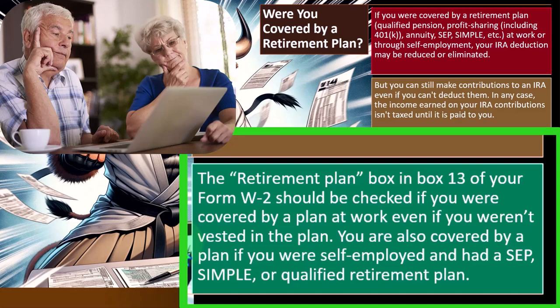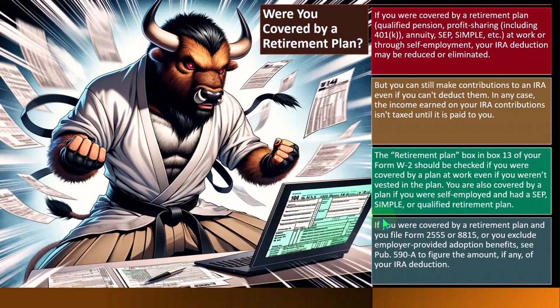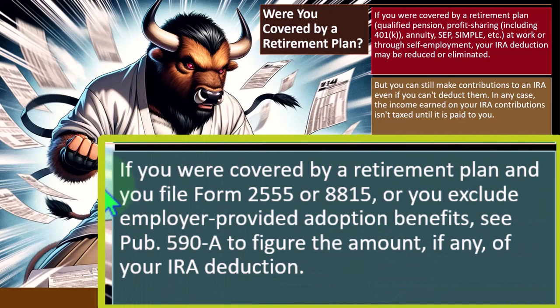You're also covered by a plan if you were self-employed and had a SEP, SIMPLE, or qualified retirement plan. If you have a Schedule C and no employer plan, you might try to put money into an individual IRA — but you might get more benefit from a SEP or SIMPLE plan. In that case, you can't also max out an individual IRA deduction, as that would be doubling up.